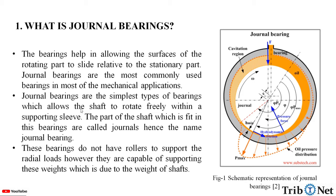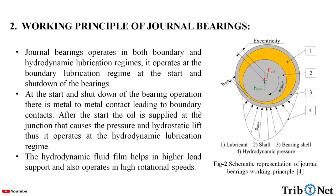Journal bearings are the simplest types of bearings which allow the shaft to rotate freely within the supporting sleeve. The part of the shaft which fits in these bearings is called a journal — hence the name journal bearings. These journal bearings do not have rollers to support the radial loads; however, they are capable of supporting the weight due to the weight of the shaft. Here in this figure we can see the schematic representation of journal bearings.